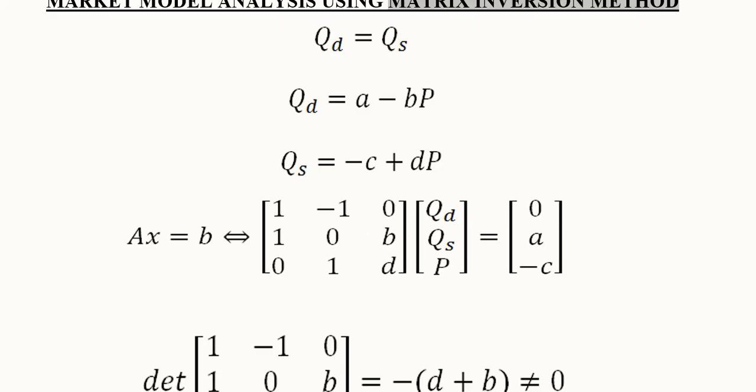Then we have the third equation. Qd has no presence here so its coefficient will become 0 even if we bring it here. The coefficient of Qd is 0, coefficient of Qs is 1 because it has a positive sign with it, and then we have price and its coefficient is d so it also appears here.